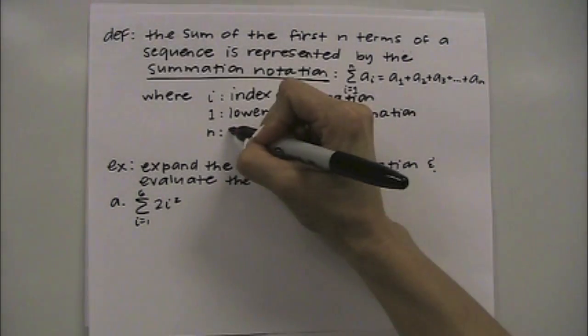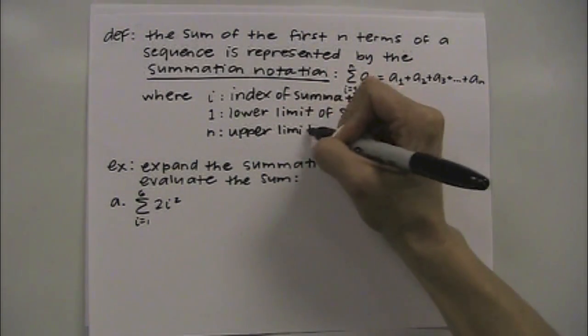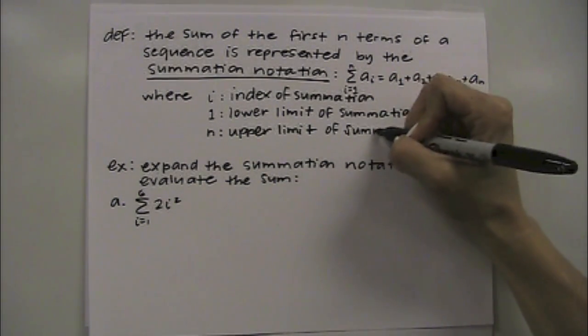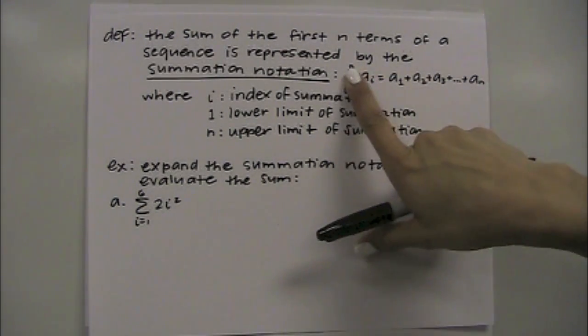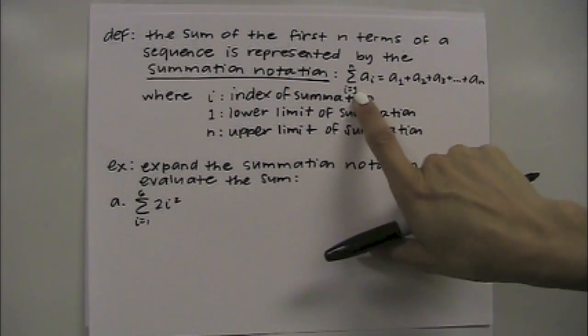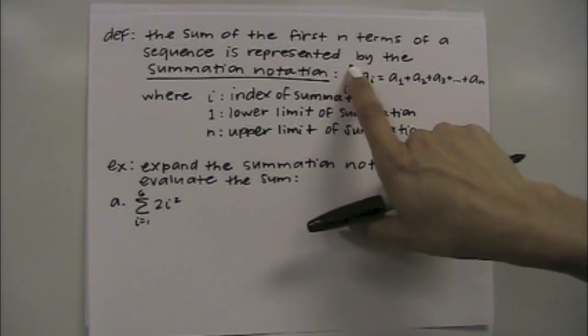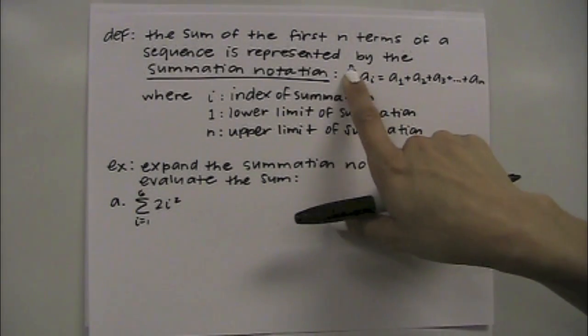And then n, we're going to call it the upper limit of summation. And the upper value is going to be what you stop with. So again it could go 1 to 3, so you would only plug in 1 then 2 then 3, add them up. Or it could go from like 5 to 8, plug in 5 then 6 then 7 then 8, so that will tell you what number to stop plugging in with.